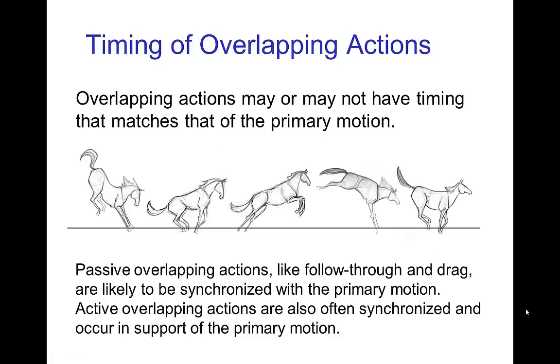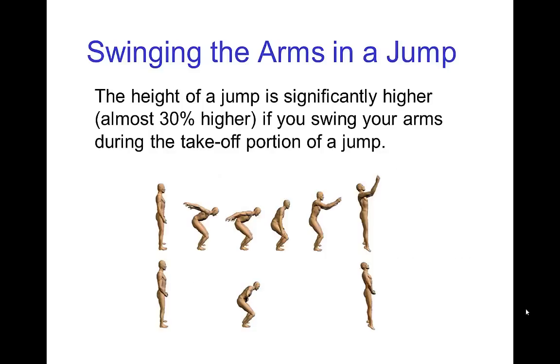Now, the timing of the overlapping actions may or may not have a timing that matches the primary motion. Passive overlapping actions like follow through and drag, they're often synchronized with the primary motion. And also sometimes active overlapping actions are also synchronized, especially if they are in support of the primary motion. A good example of that is swinging the arms in a jump. So the height of a jump is significantly higher if you swing your arms as you're taking off.